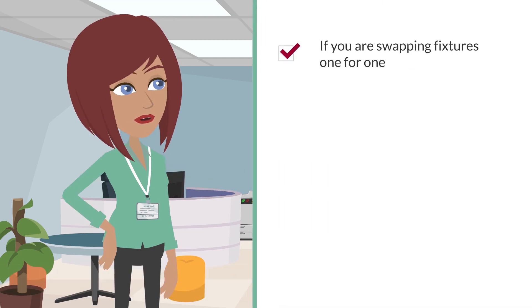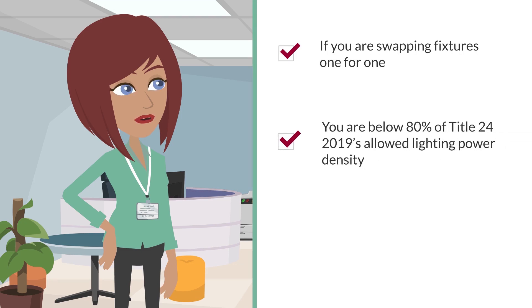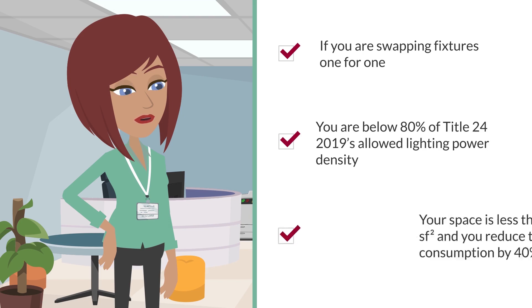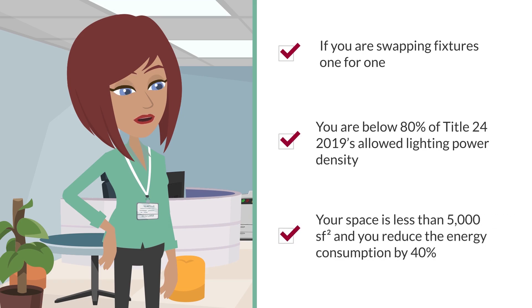1. If you are swapping fixtures one for one. 2. You are below 80% of Title 24 2019's allowed lighting power density. 3. Your space is less than 5,000 square feet and you reduce the energy consumption by 40%.